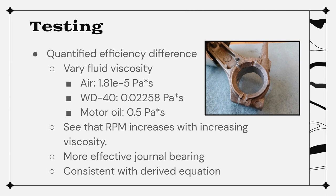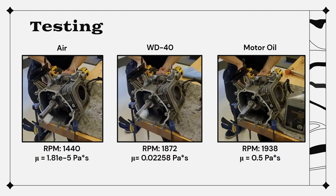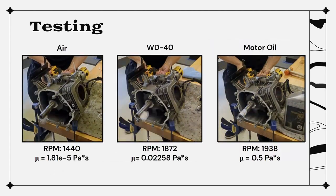As you can see from this test, that is actually exactly what happened. You can see that on the left, the engine with the air bearing is spinning visibly much slower than the one with motor oil.